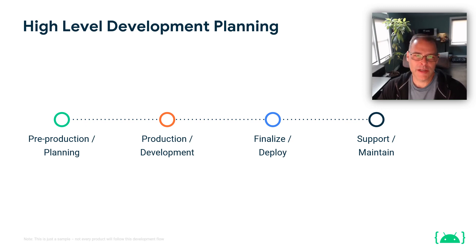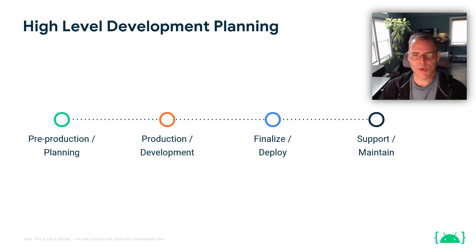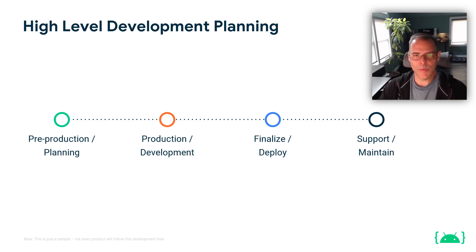Getting into full-scale production and development — this is the guts of building your game. You're implementing your product, creating the art assets, the code, and all the resources associated with what makes the game your game. As you get close to finalizing and deploying, this is typically where you're doing more internal and external focus testing, taking advantage of things on the Google Play console where you're able to distribute limited, private, or public betas.